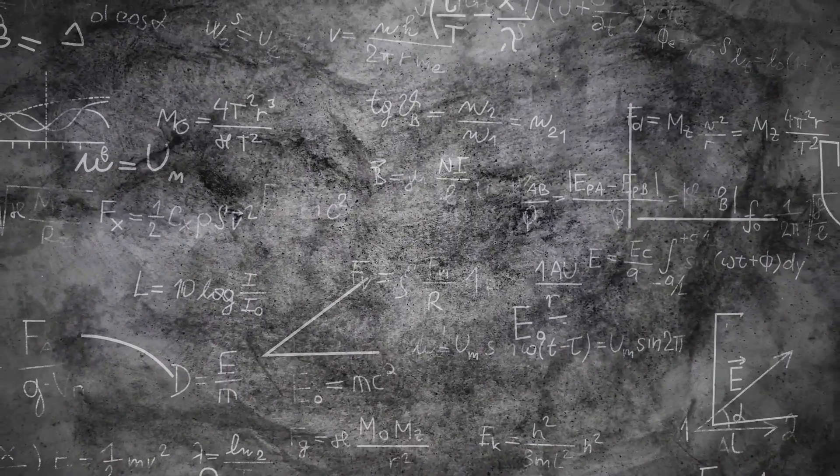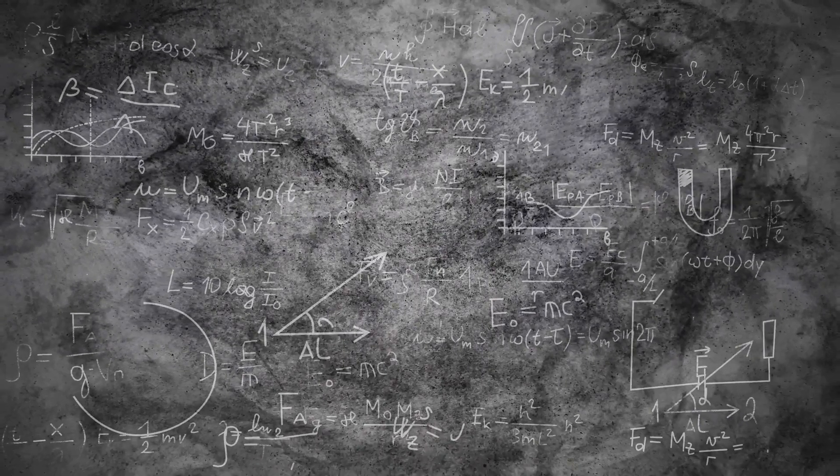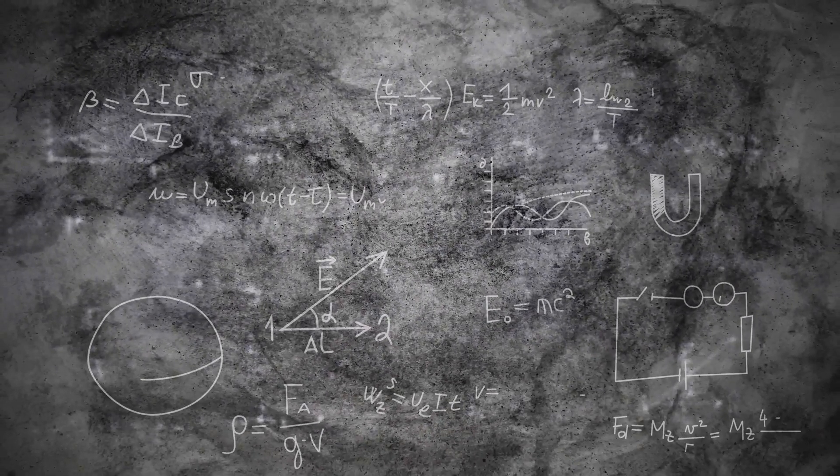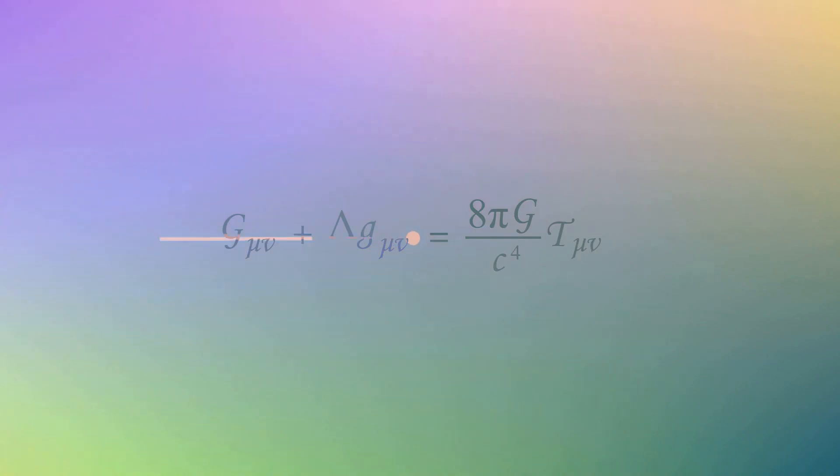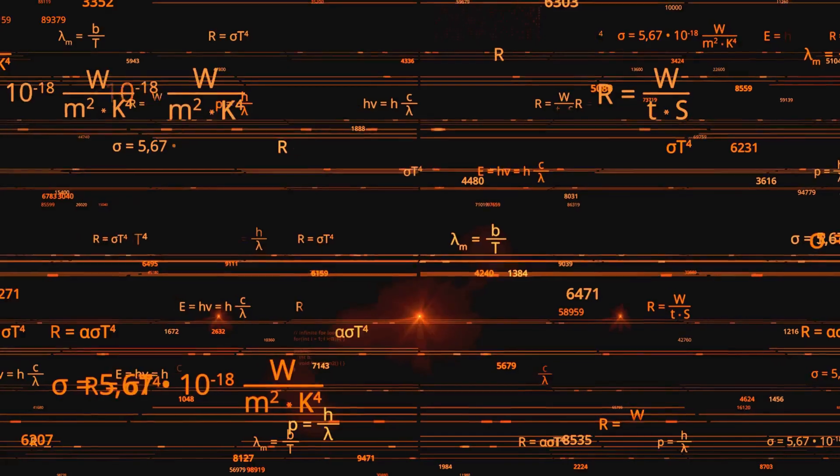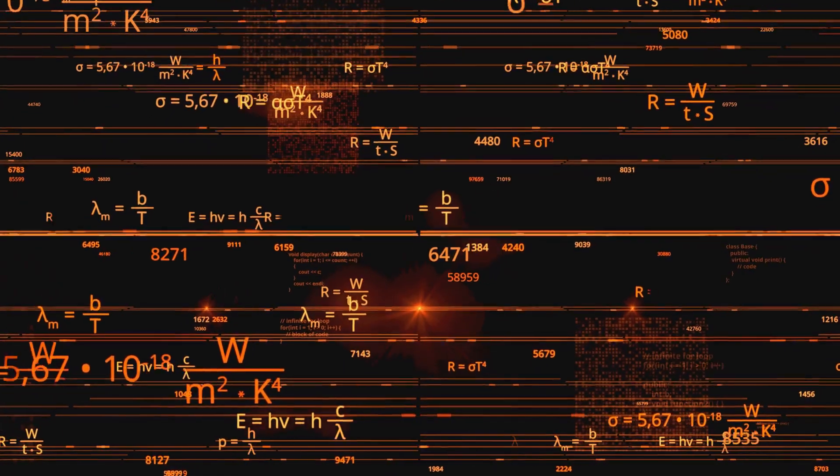This question led him to formulate the law of universal gravitation. A law that states that every particle of matter in the universe attracts every other particle with a force that is directly proportional to the product of their masses and inversely proportional to the square of the distance between their centers.